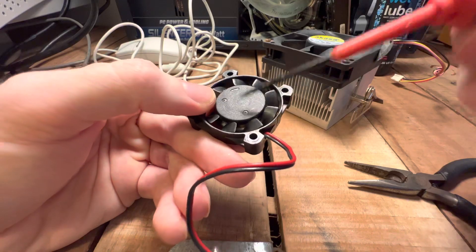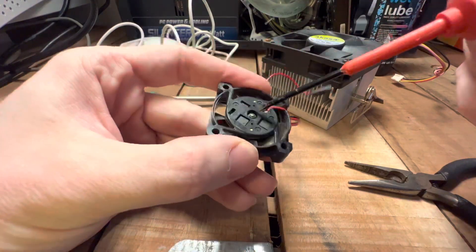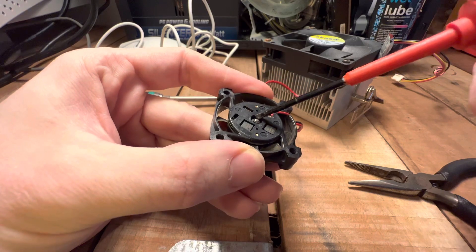What you want to do is try and remove that clip, and that should let you push out the actual fan blade assembly out this side, and then we can get to the inner workings.